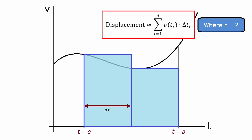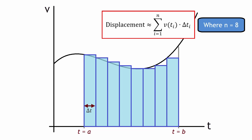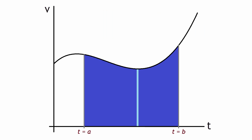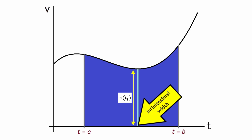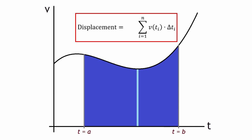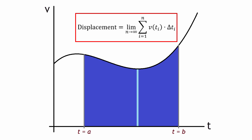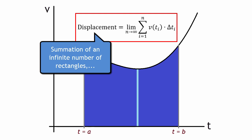We can divide the rectangle into smaller and smaller pieces, making delta t smaller and smaller, to get a more accurate idea of the area under the graph. We can divide further and further until we get rectangles so small they actually cover the entire graph. The width of each rectangle becomes infinitesimally small — delta t approaching zero — giving us an infinite number of rectangles. We're summing the areas of an infinite number of infinitesimally small rectangles, and this is the concept behind integration.